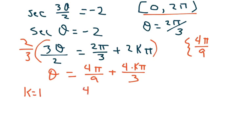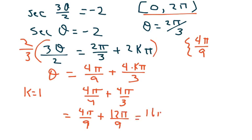We get 4 pi over 9 plus 4 pi over 3, which equals 4 pi over 9 plus 12 pi over 9, which equals 16 pi over 9. Is that in between 0 and 2 pi? Yes. So we have another solution.